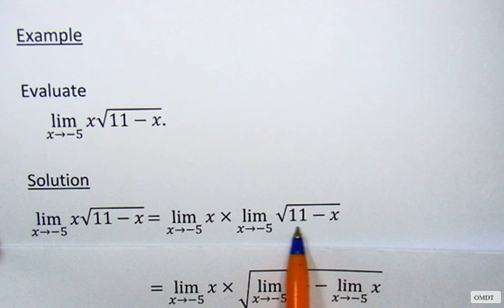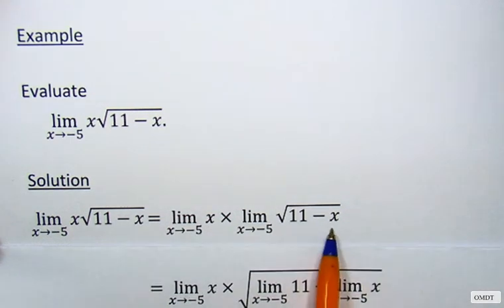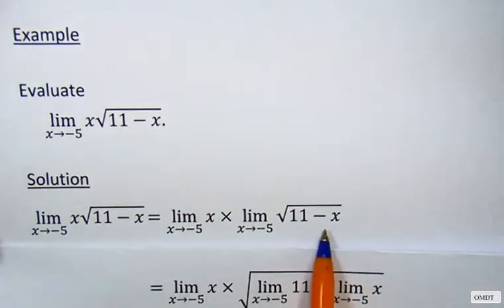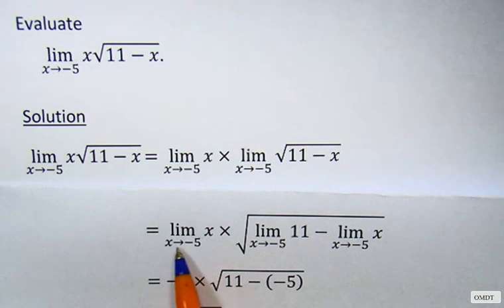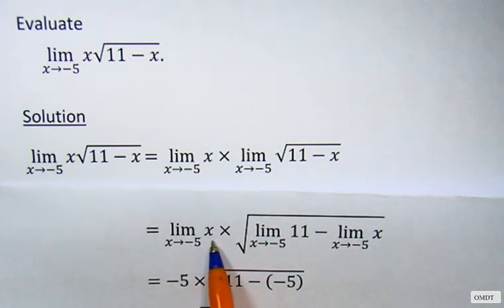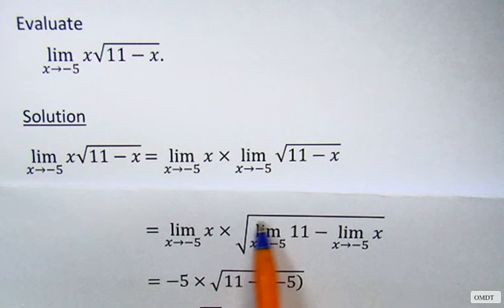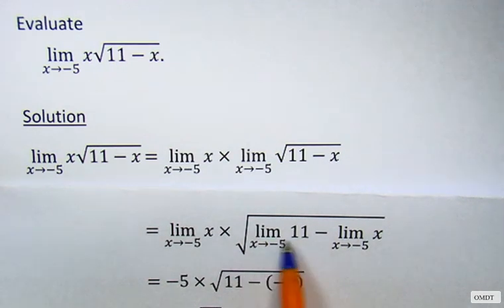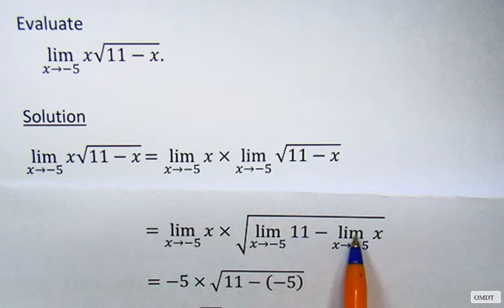of square root of 11 minus x. This again can be broken down further into limit as x approaches -5 of x, times square root, and inside the square root we have limit as x approaches -5 of 11, minus limit as x